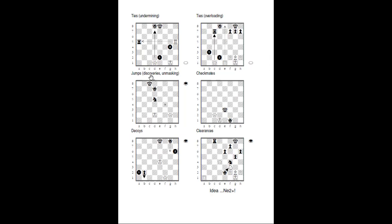Jumps — sometimes known as discovered attacks, unmasked attacks, or X-rays — involve two pieces on the same line with something in the way that then moves. Queen on d7, king on d2: when the knight gets out of the way it will be check. Knight goes to f4, attacking something more valuable; the queen attacks the king because the knight is out of the way; the king has to move; then the knight from f4 captures the white queen on g2 — that's a discovered check.